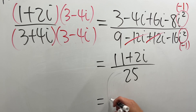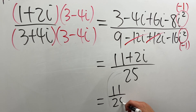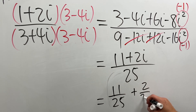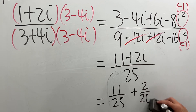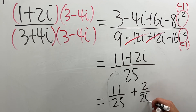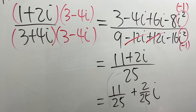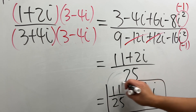Write this in standard form. We have 11 over 25 plus 2 over 25 i. It's just like the mashed potato on the side with your burger. That's it.